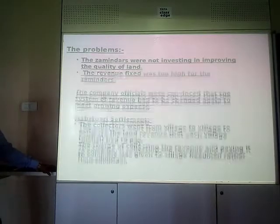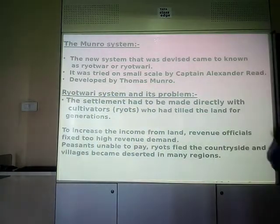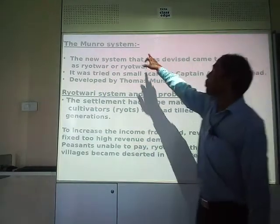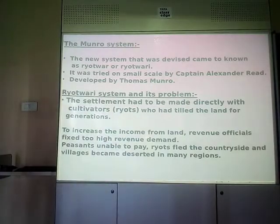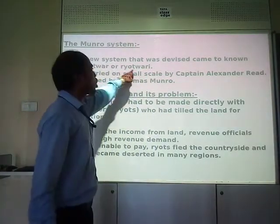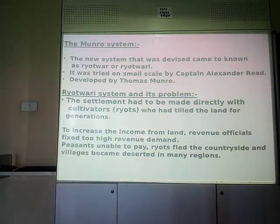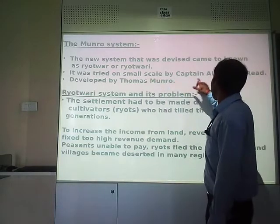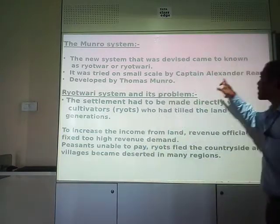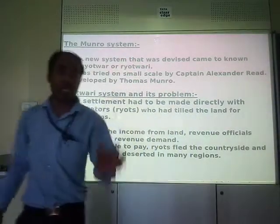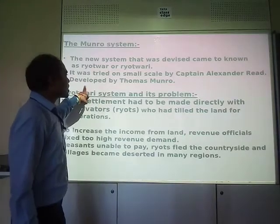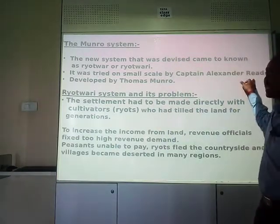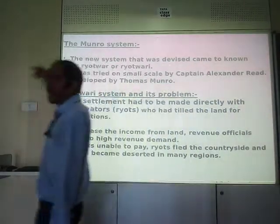Permanent Settlement and Mahalwari Settlement were taking place in North India. For South India, the Munro System was devised, also known as Ryotwari or Ryotwari Settlement. It was tried on a small scale by Captain Alexander Reed and developed by Thomas Munro — that's why it was called the Munro System.